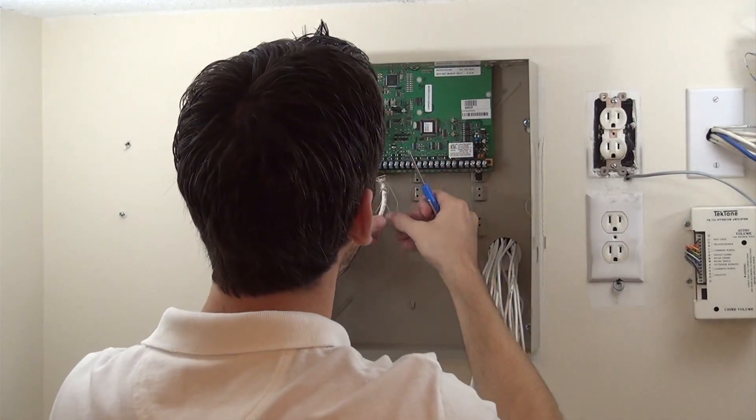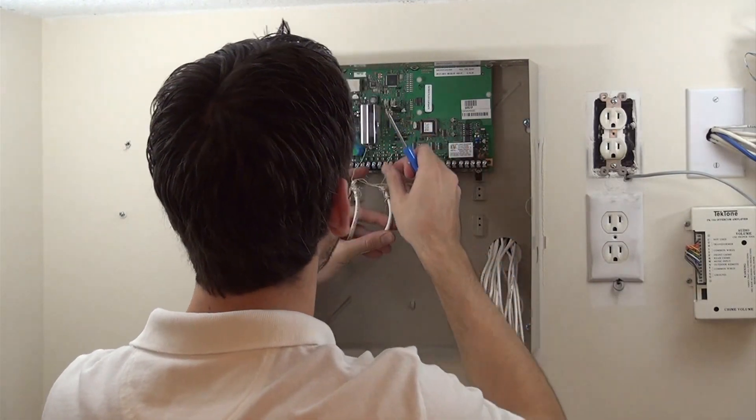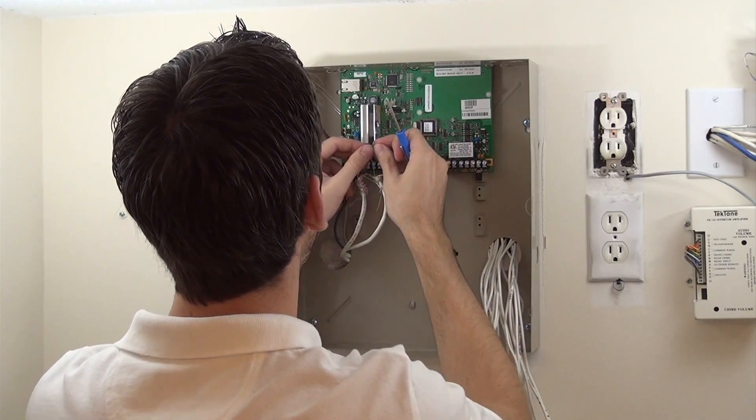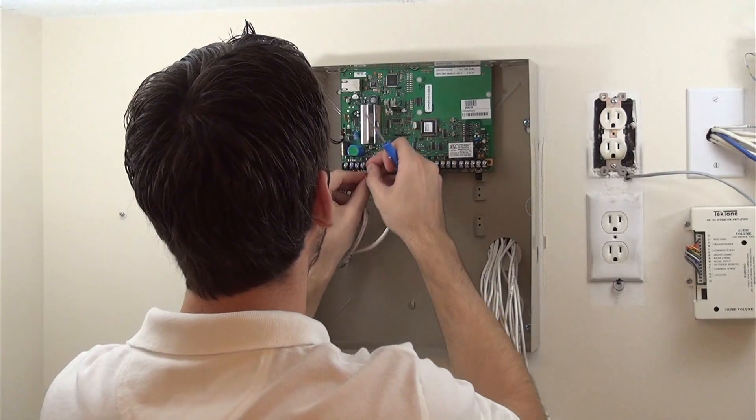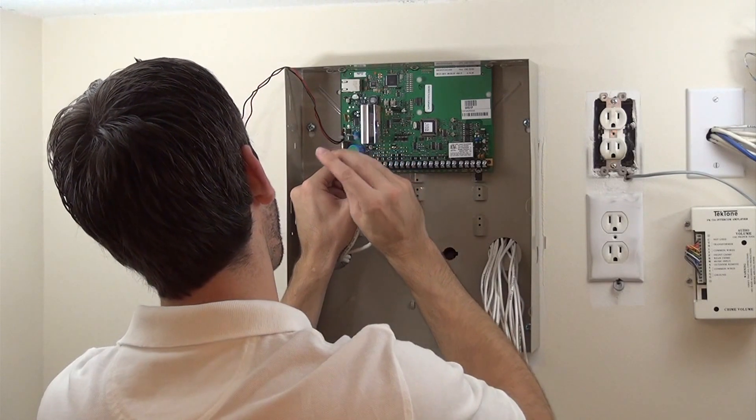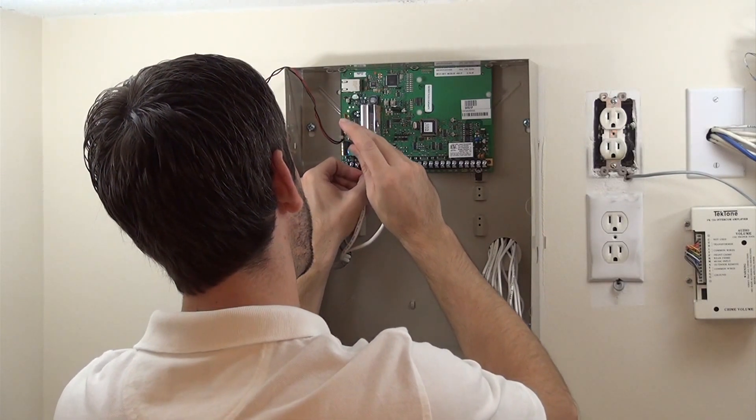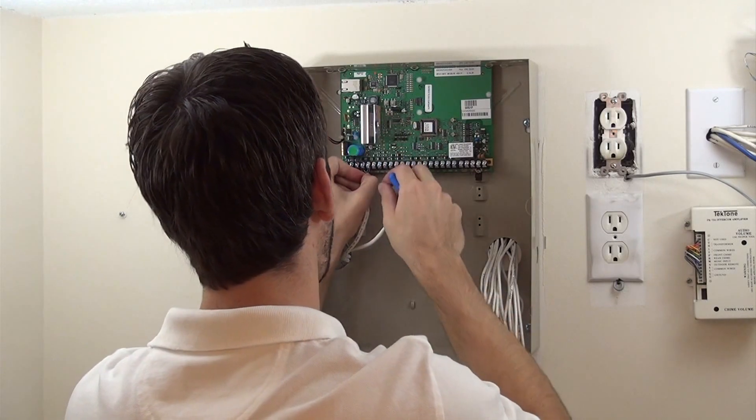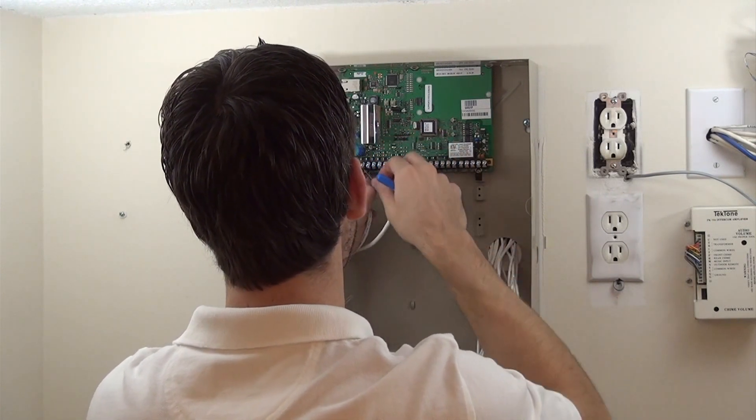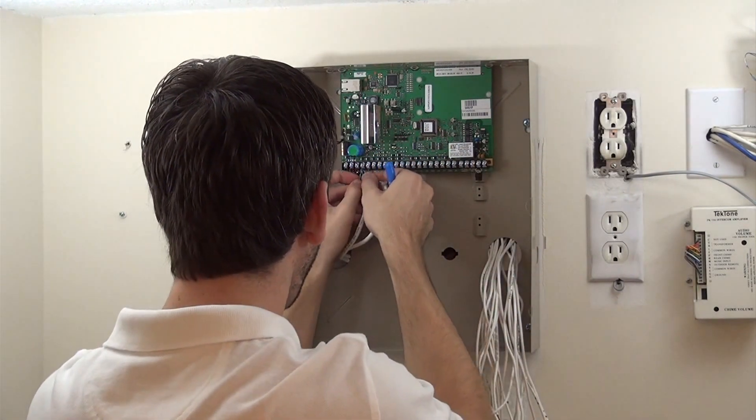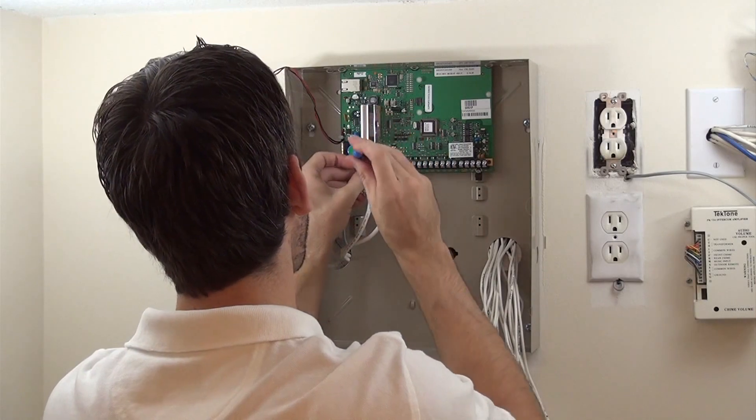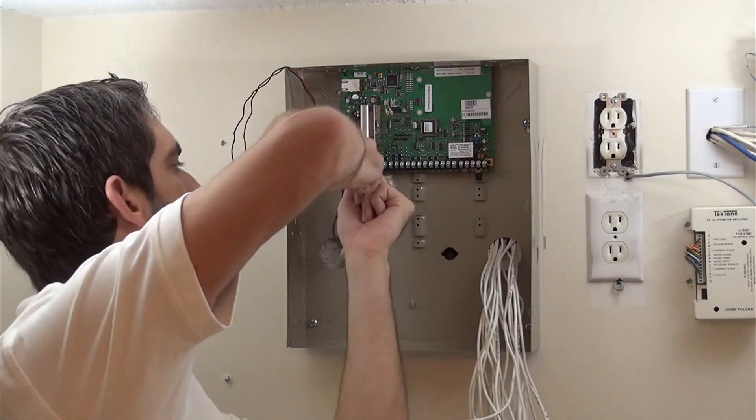And we're going to go and choose our next color, green. Again, the color doesn't really matter for what we're doing since it's an existing run. The important part will be to make sure that we're landing the proper colors on the actual keypad once we get to there. So we're going to go green to power positive or aux power. Nice and tight.